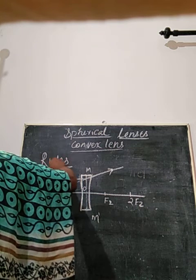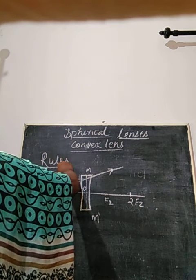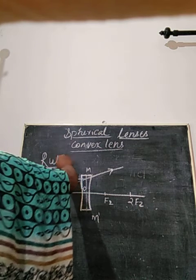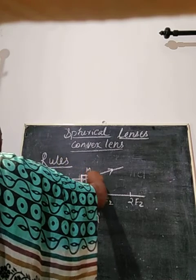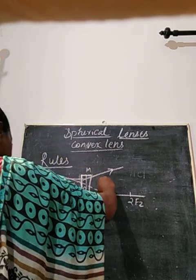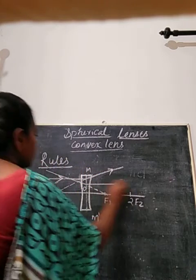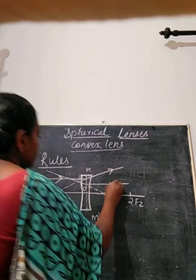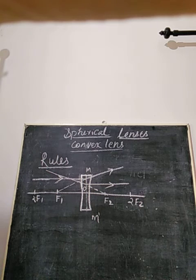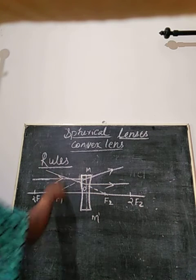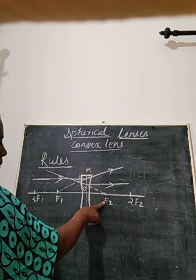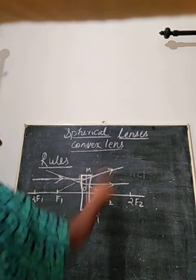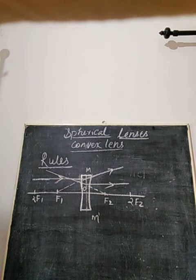If a ray is coming towards point f2, pointing in that direction, it becomes parallel to the principal axis after refraction. This ray appearing to be directed towards f2 becomes parallel to the principal axis after refraction.